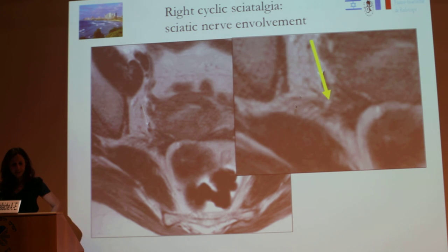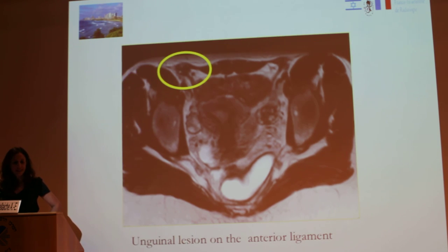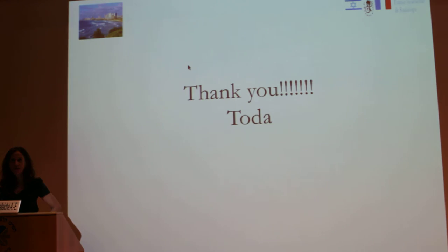Here is an example of sciatic nerve involvement. For subcutaneous wall lesions, it is easier to make the diagnosis with MRI. You can see the hyposignal T2 nodule on the right side of the pelvis.